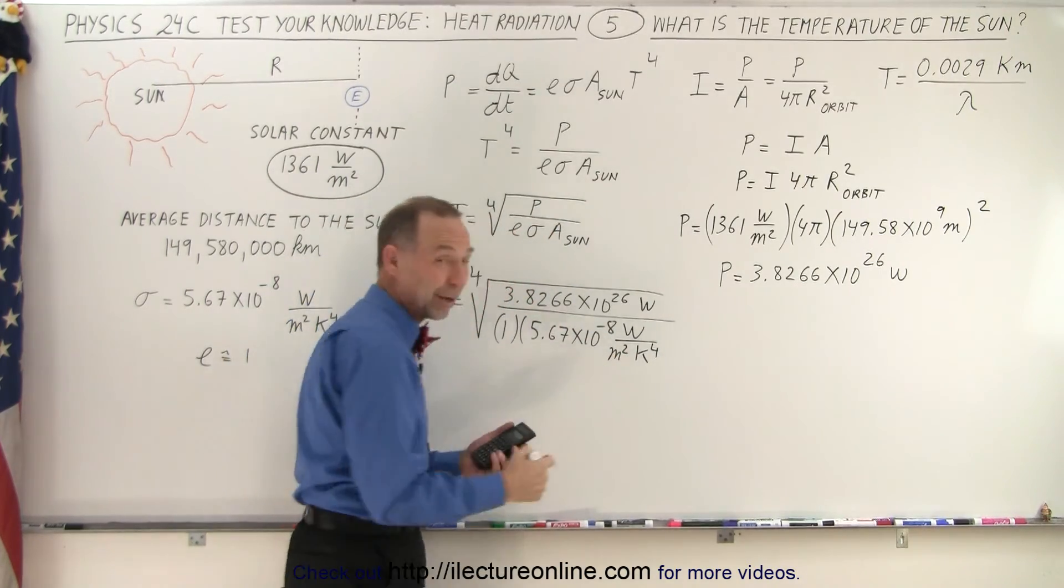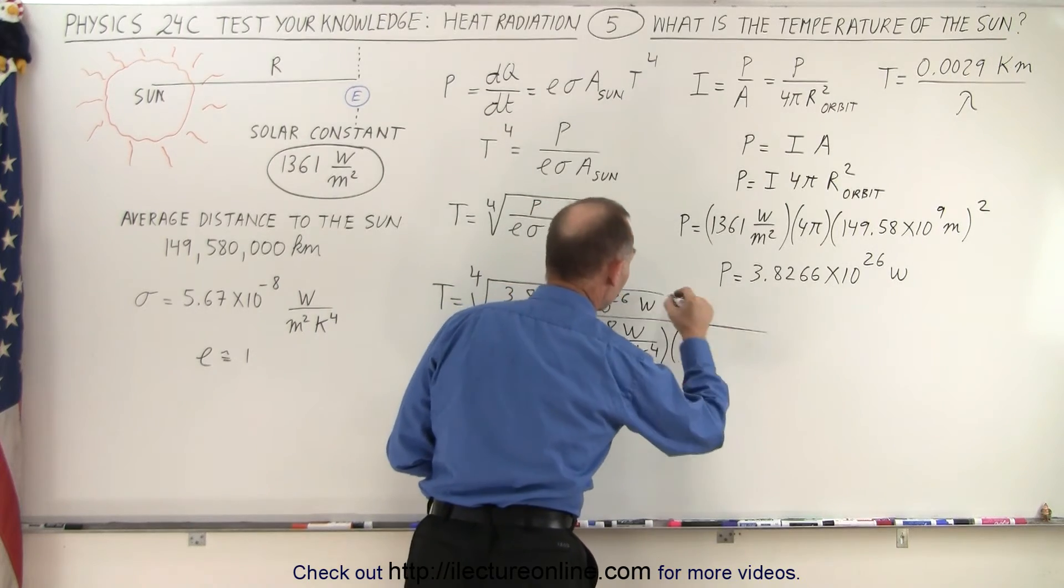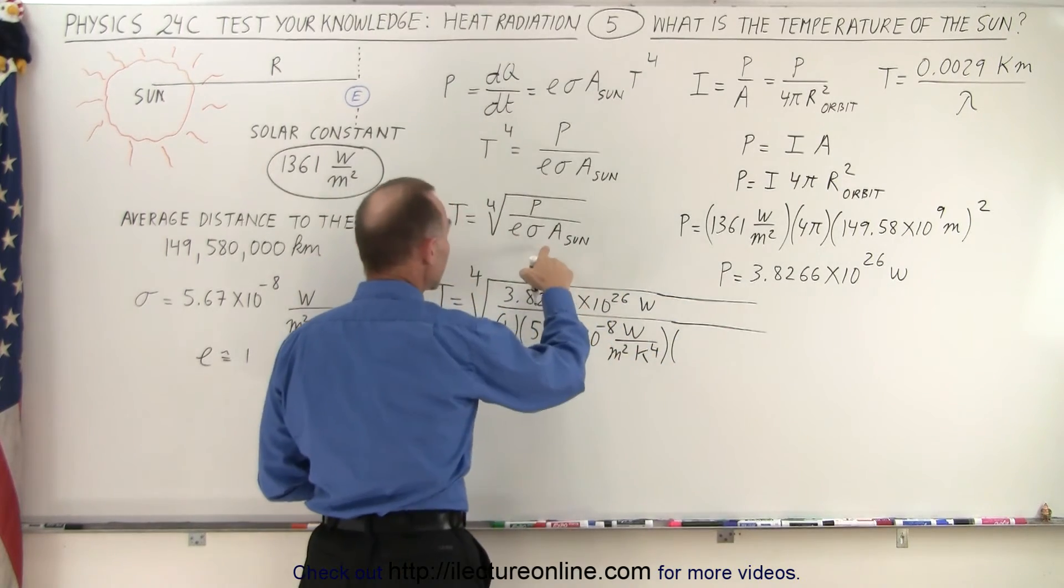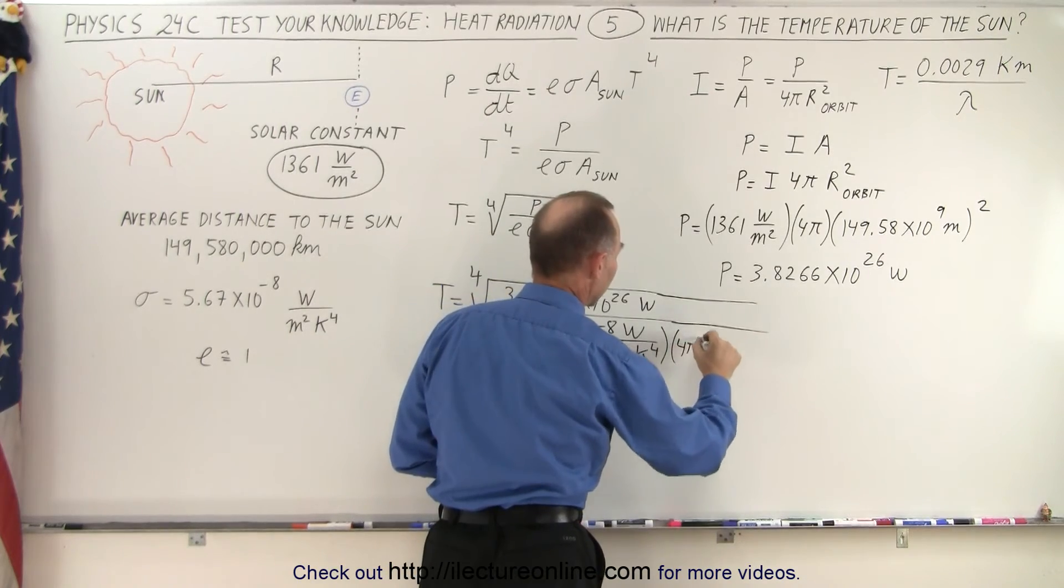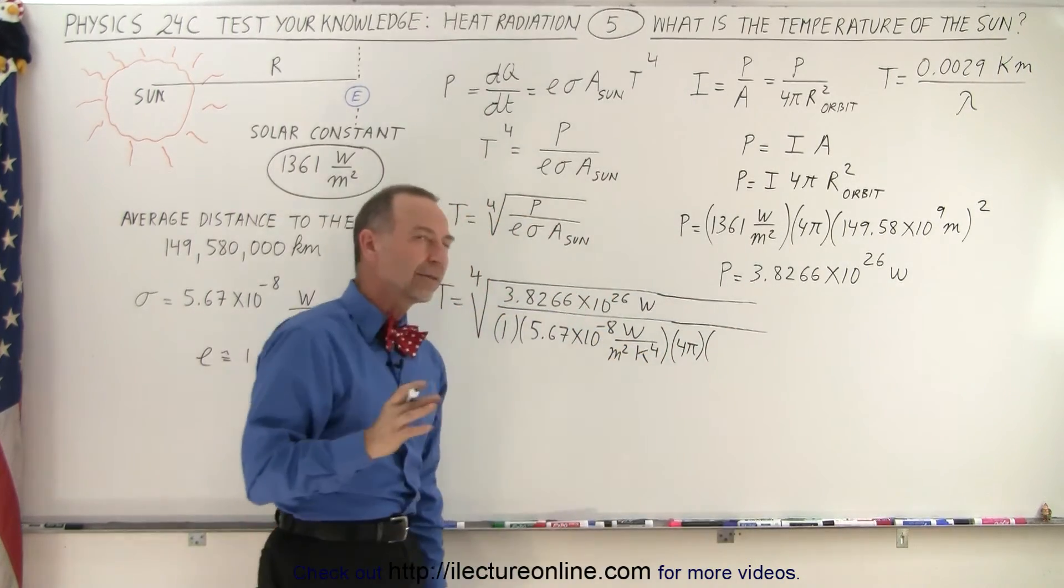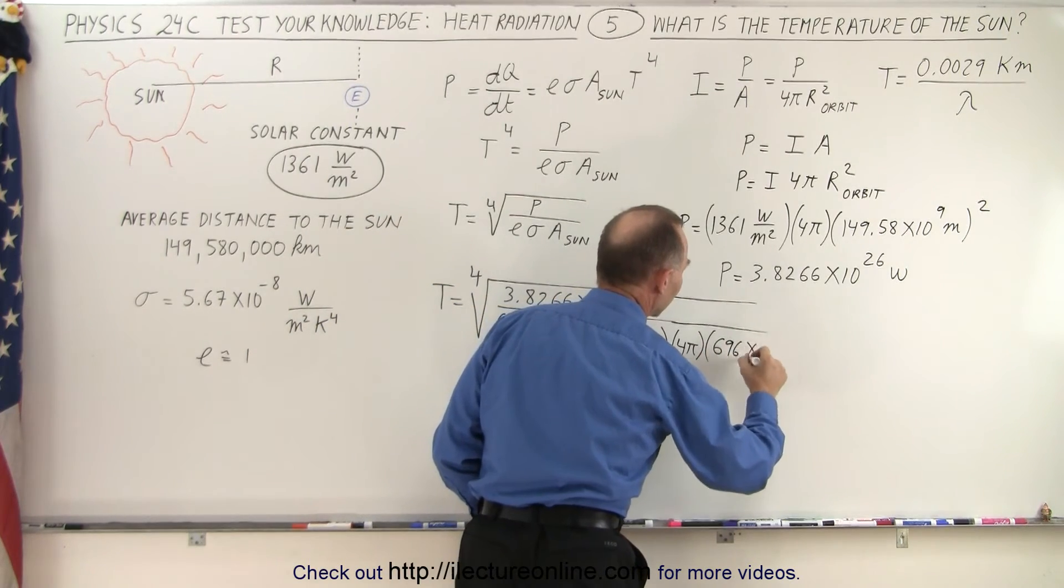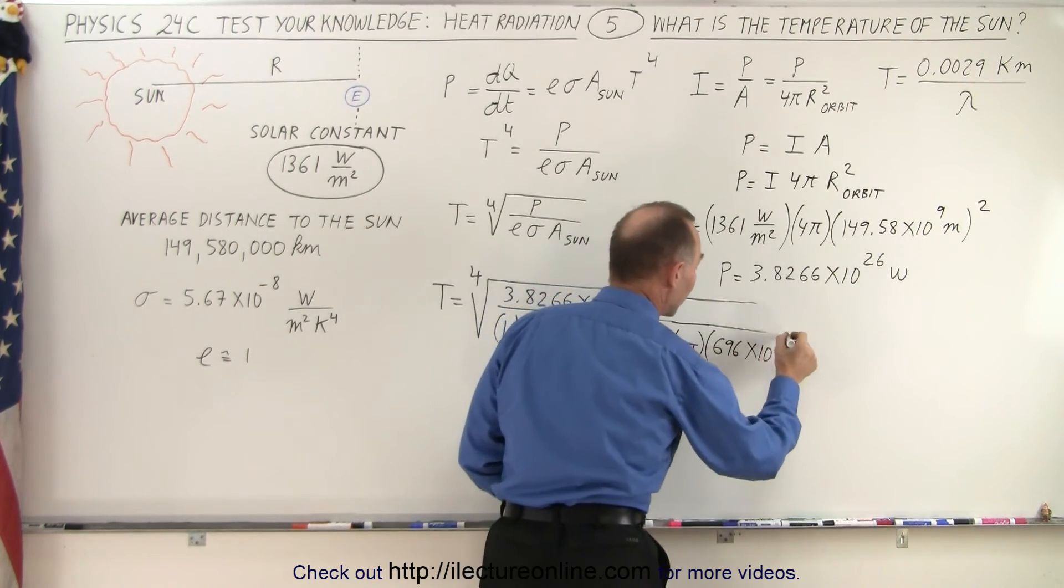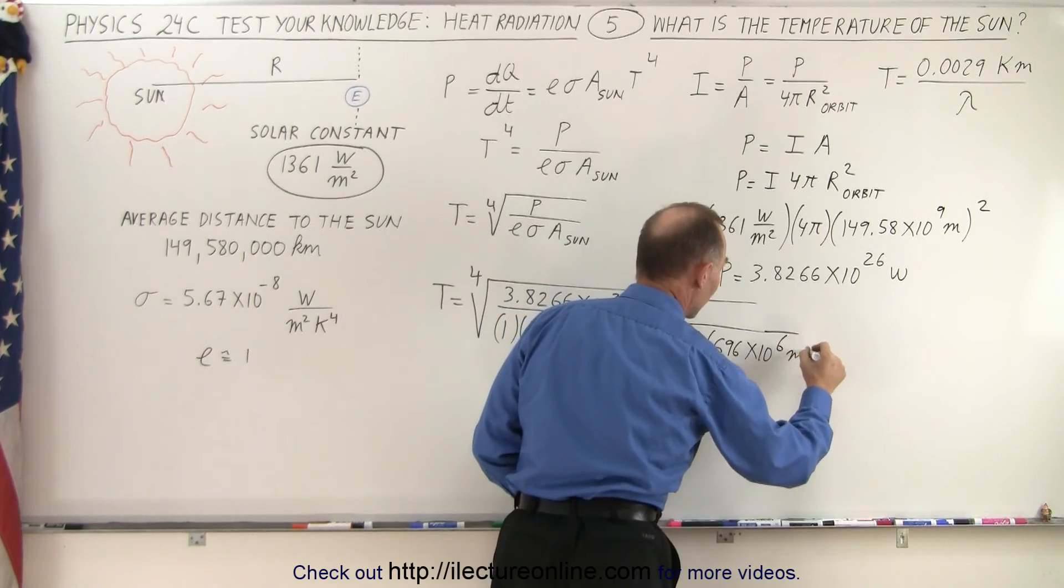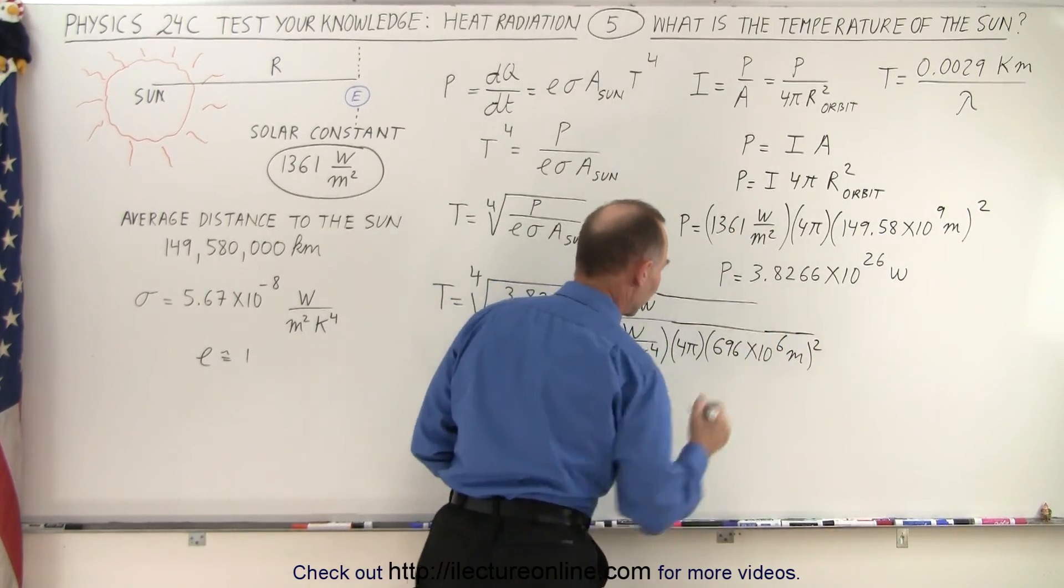We take the fourth root of Kelvin to the fourth power, we just get Kelvin, and then we multiply that times the surface area of the sun. That would be 4π, and the radius is 696,000 kilometers, so it would be 696×10⁶ (because we want to convert that to meters), and we want to square that so the square meters cancel out.